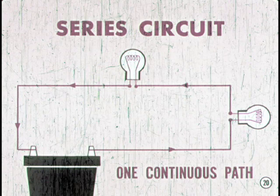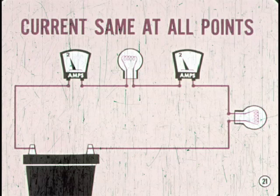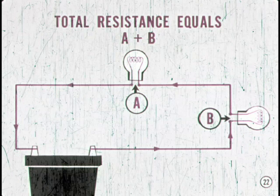Here we have a series circuit. The important thing to remember is that there is only one continuous path for current flow through the two lamps or resistance units. All of the current flowing in a series circuit must pass through each resistance unit. Why is this important? The current, in amperes, is always the same at all points in a series circuit. This is always true, regardless of how many resistance units you connect. The total resistance in a series circuit is equal to the sum of all the resistances in the circuit.